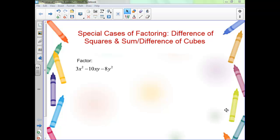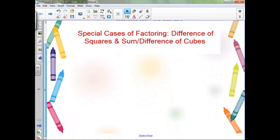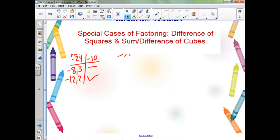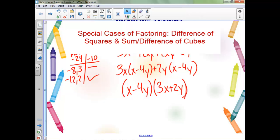Let's start with a review of factoring a trinomial. Remember we want to find two numbers that multiply to negative 24 and add to negative 10. So we've got 3x squared minus 12xy plus 2xy minus 8y squared, and that's factored.